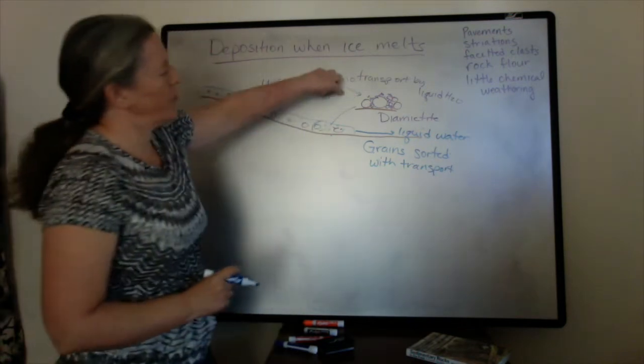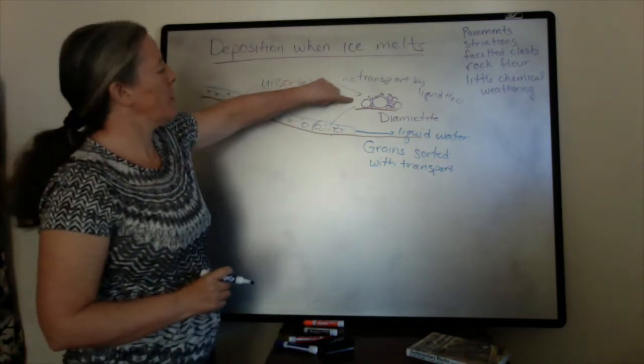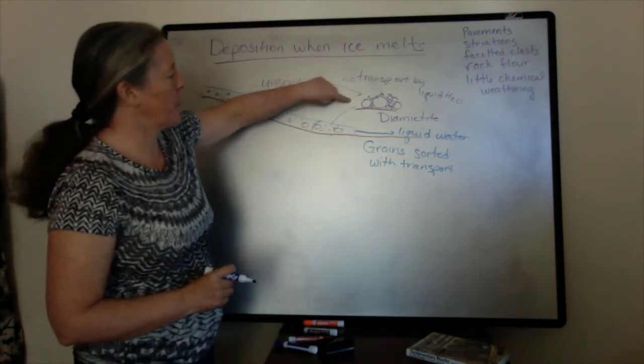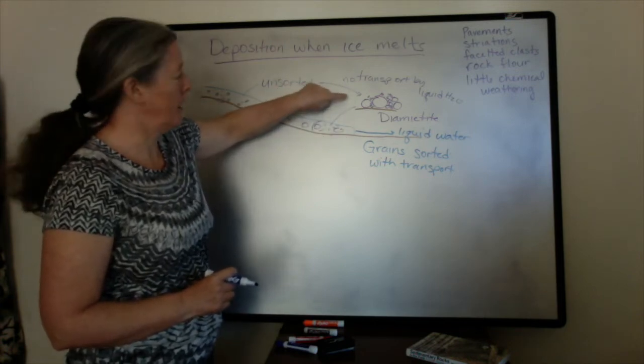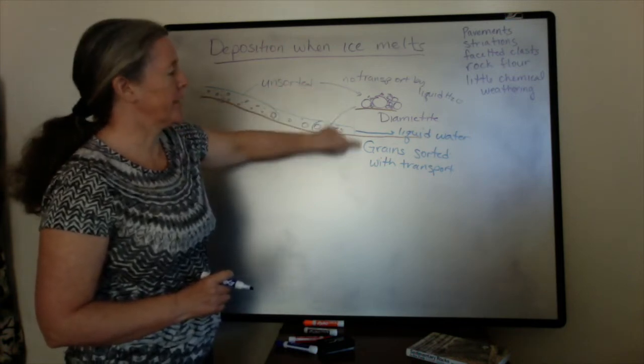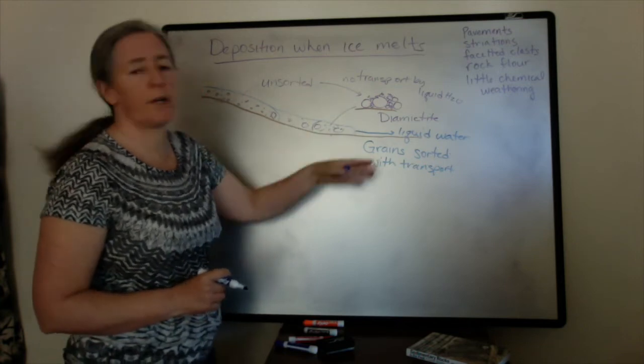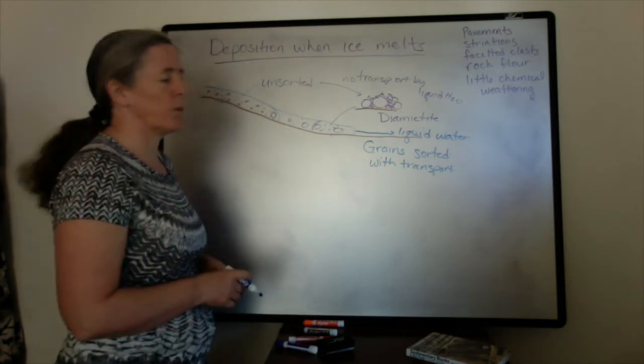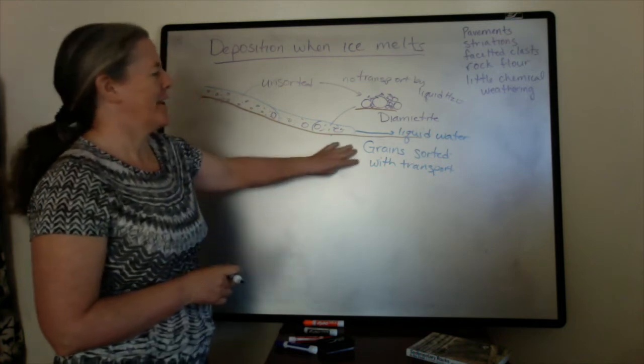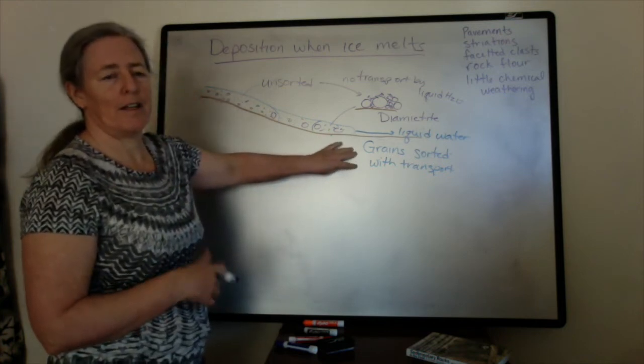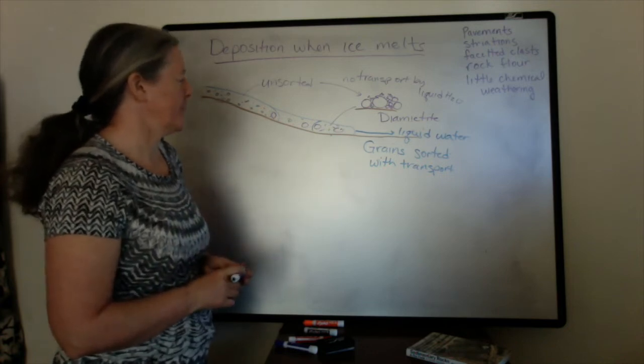So if you have very large boulders and a mix of cobbles that aren't small enough for the water to transport, what's left behind can be poorly sorted. But the grains that are actually transported in the turbulent flow of the liquid water follow the Hjulström diagram and you end up with better sorting of those grains through time.